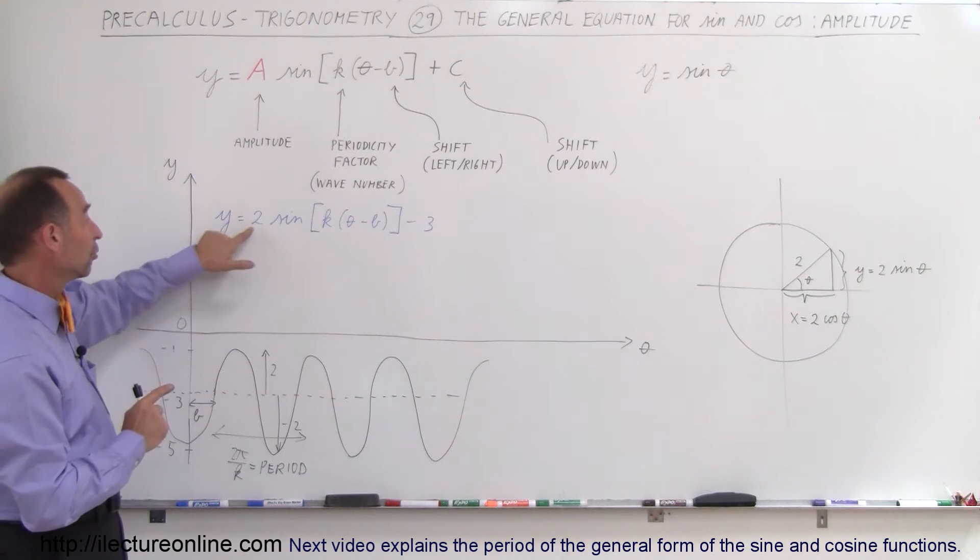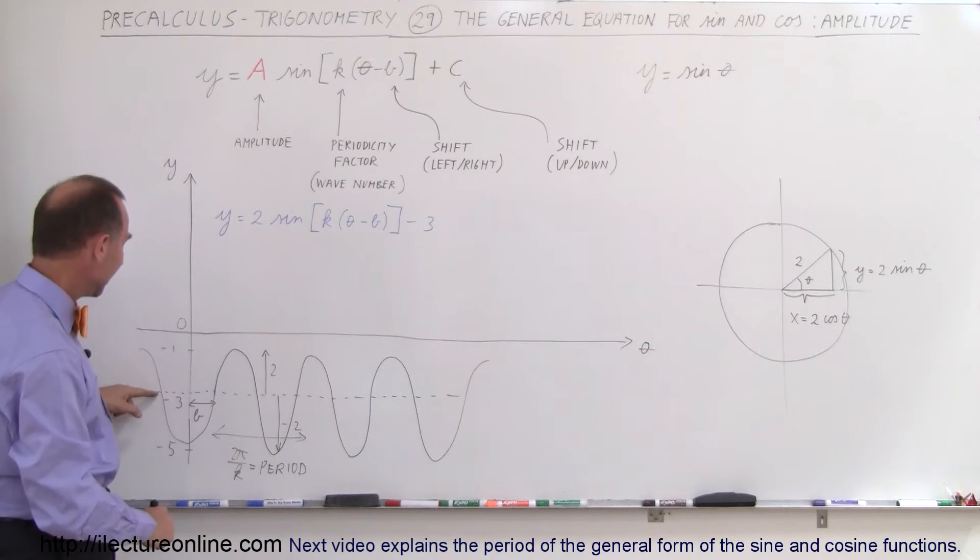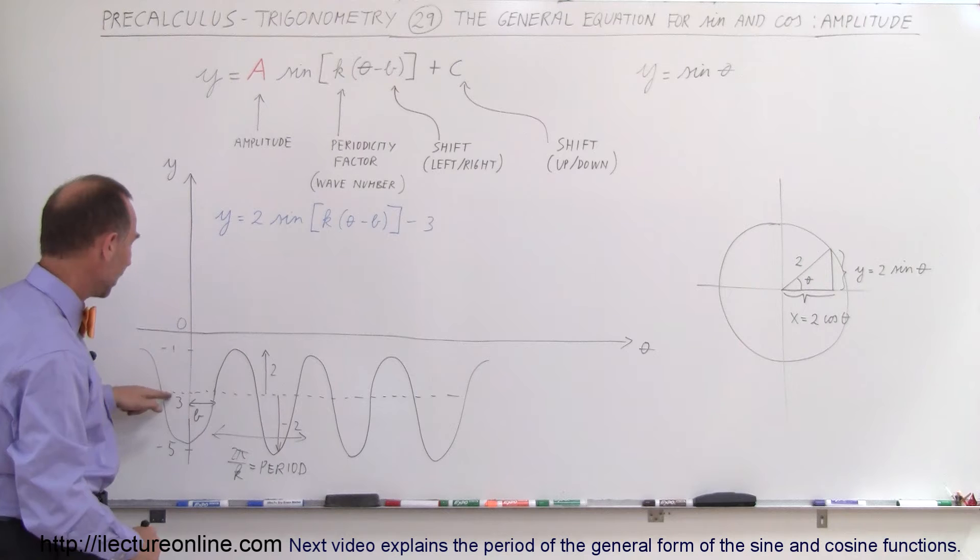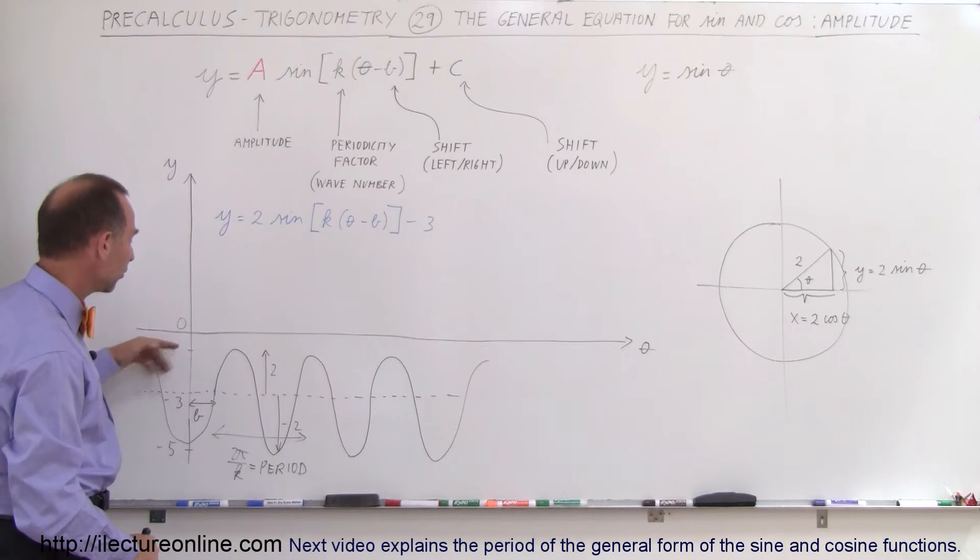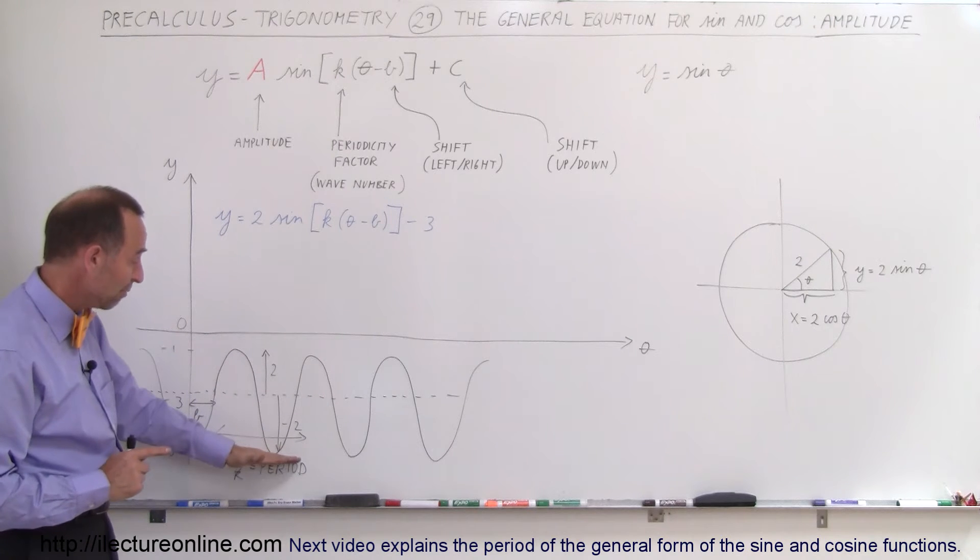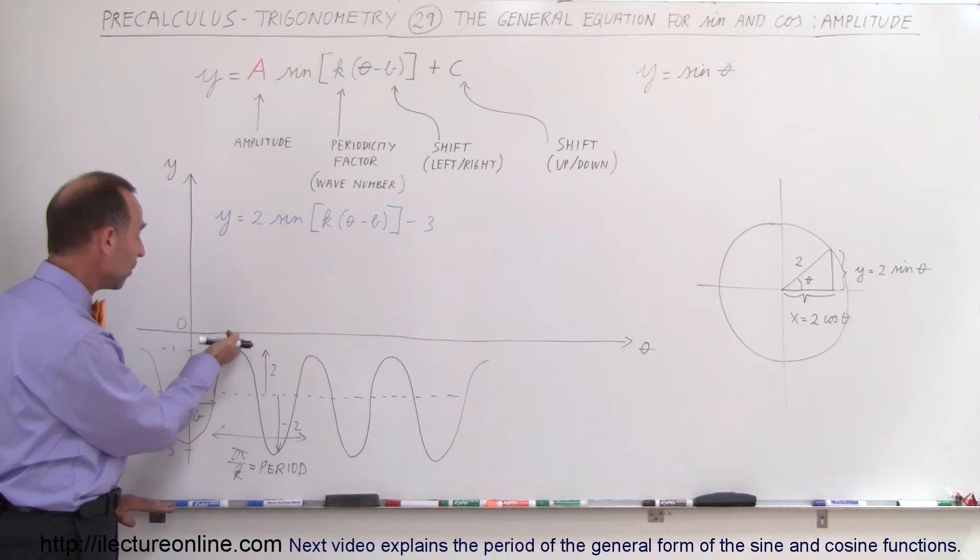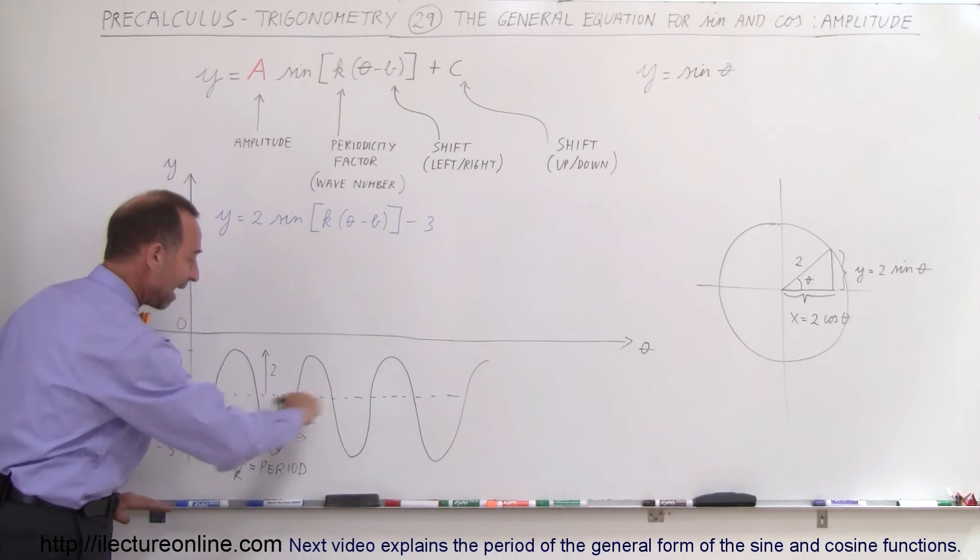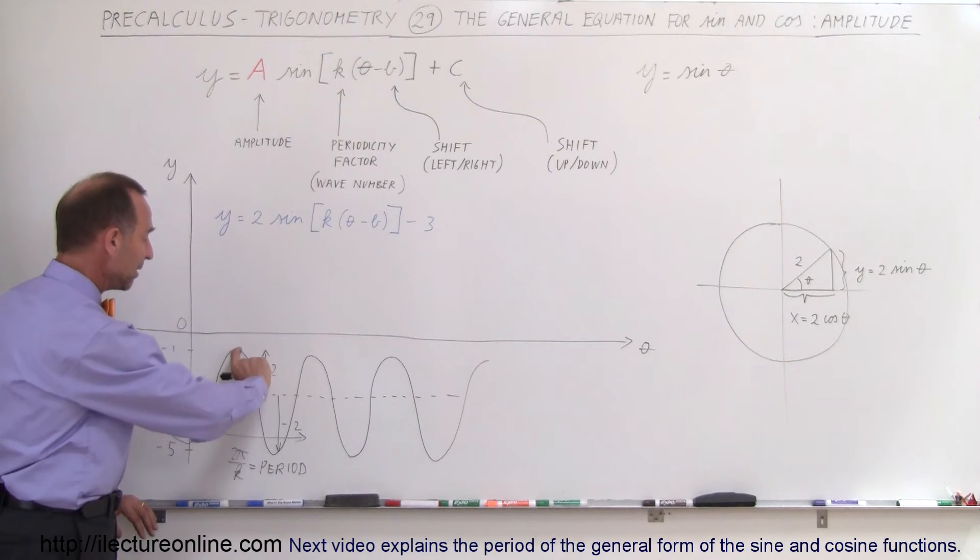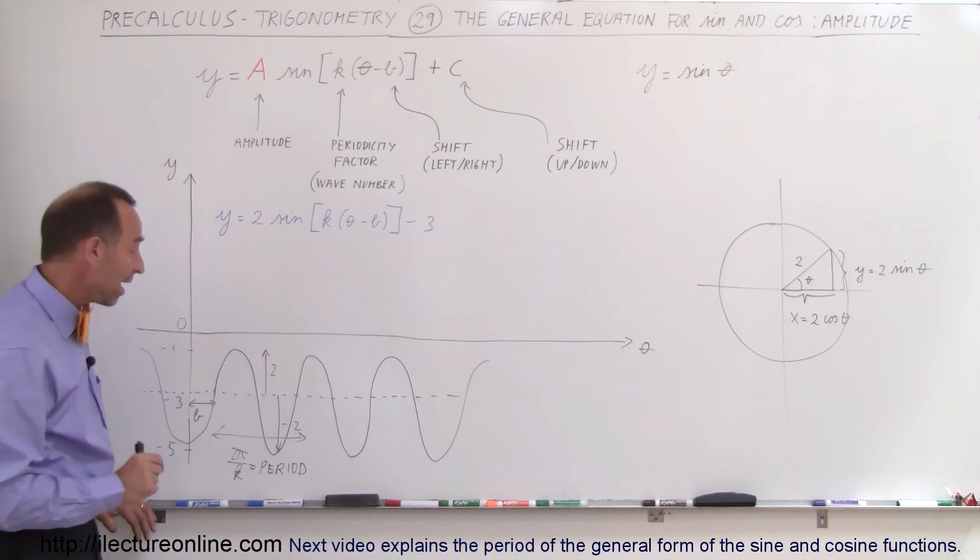Now the amplitude here is 2. That means at the maximum value, it will be 2 greater than the value in the middle right here. So 2 greater than minus 3 will be minus 1. That means the maximum value for the function will be minus 1 and the minimum value will be minus 5. So we'll oscillate 2 units above and 2 units below this average value.